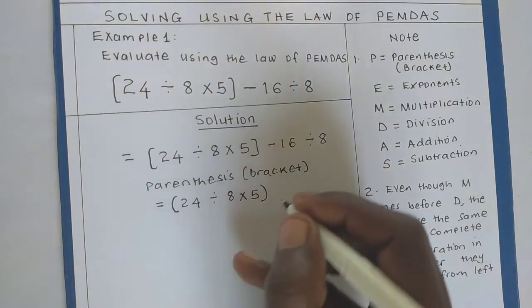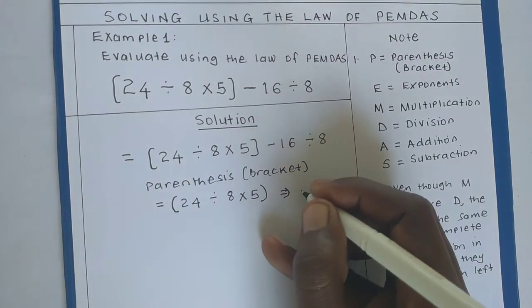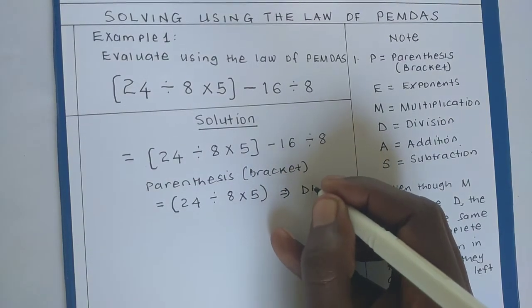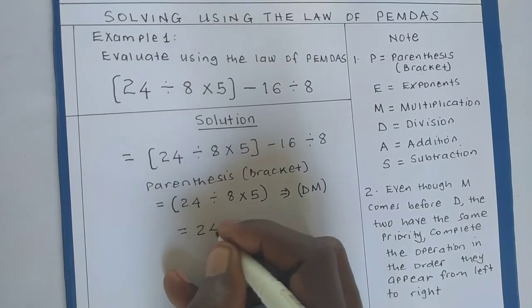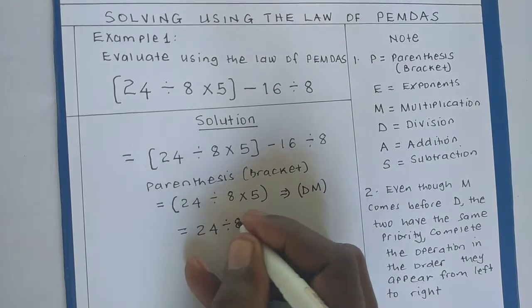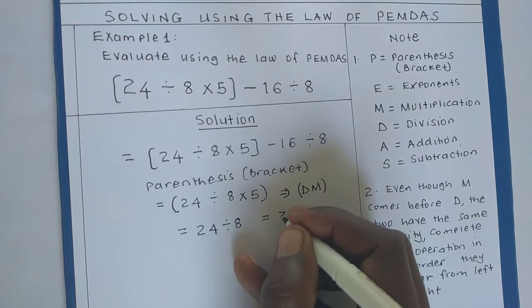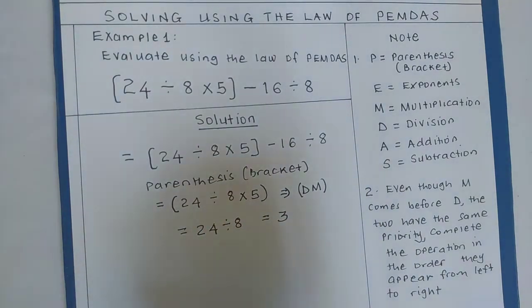we are going to first divide and then multiply using that law. So we shall have 24 ÷ 8. 24 divided by 8, we get 3. Let's continue.